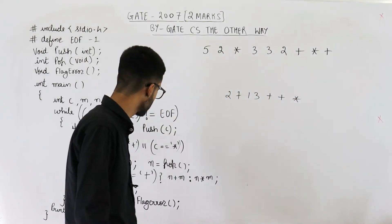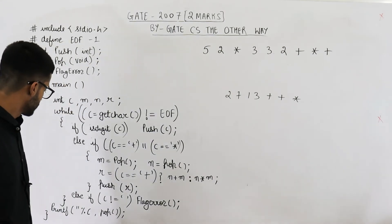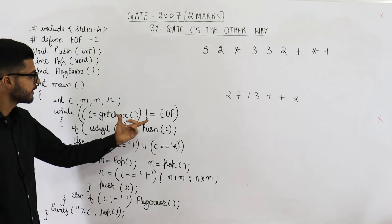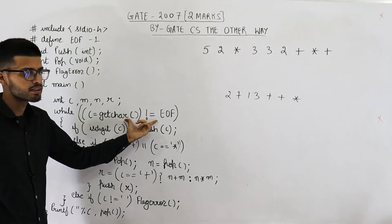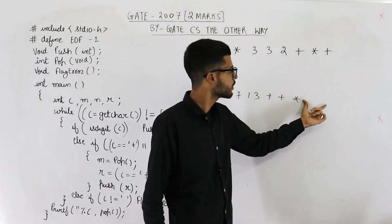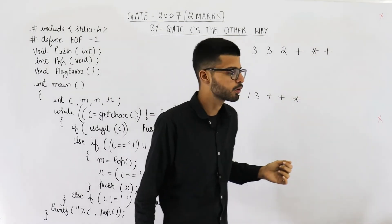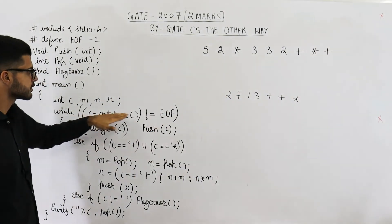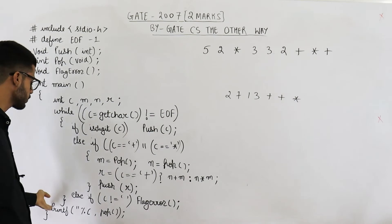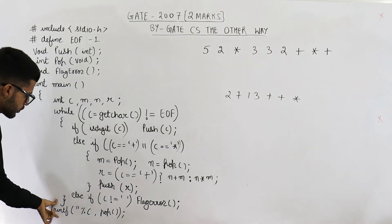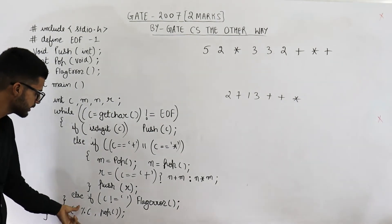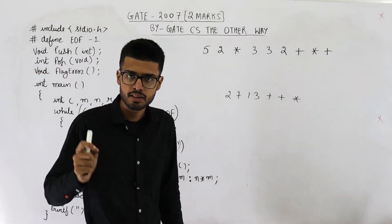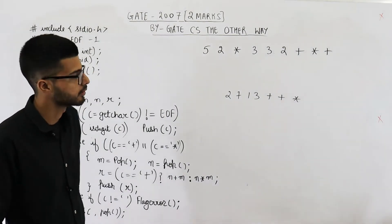When will this loop end? When this condition becomes false — that means when you reach the end of the file or end of the input. Automatically this condition becomes false, you come out of the loop, and you execute the next line: printf("%c", pop()). That means whatever is currently on top of the stack, you print it.